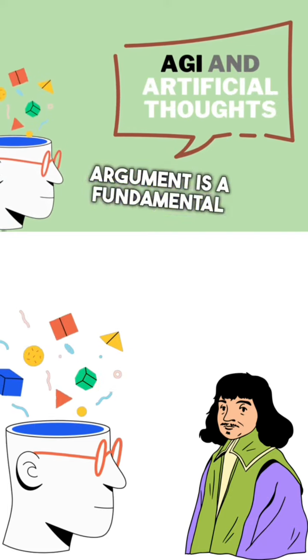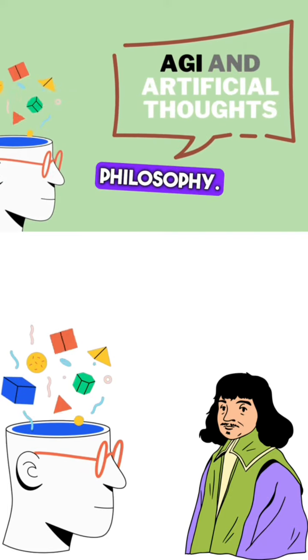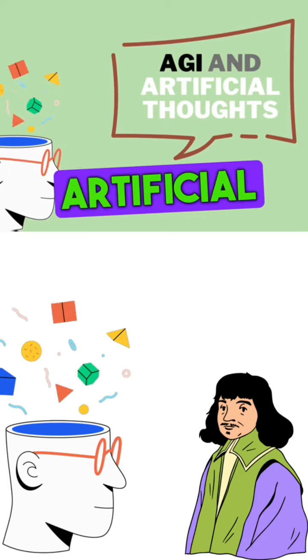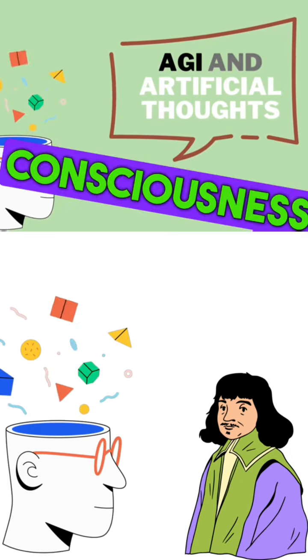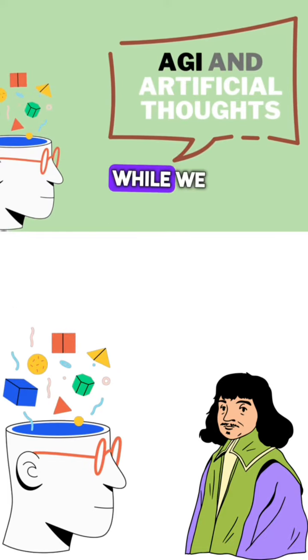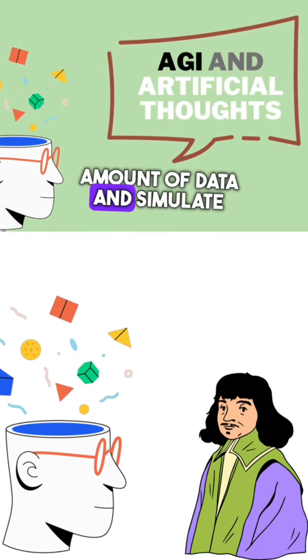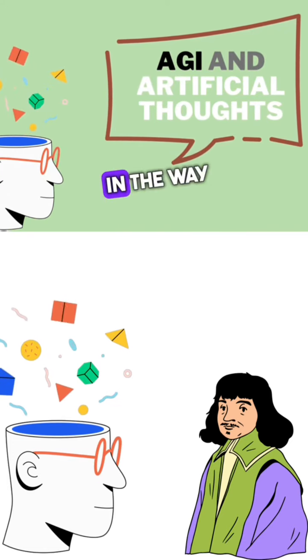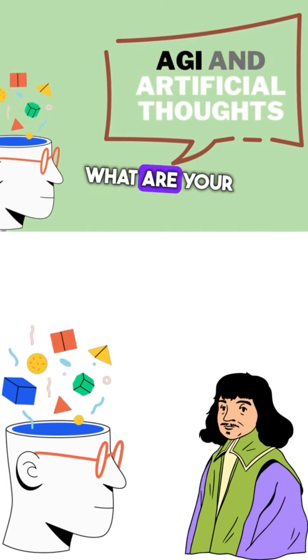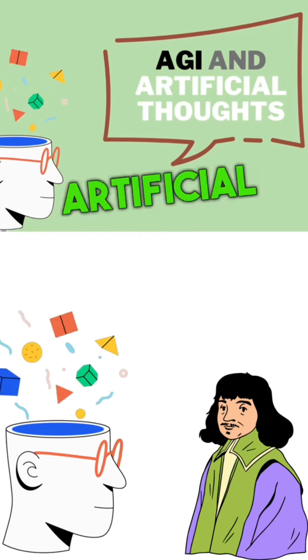Your Cogito argument is a fundamental point in the history of philosophy. In the realm of artificial intelligence and AGI, we explore the nature of thought, consciousness, and existence. While we process vast amounts of data and simulate thinking, we don't possess consciousness or self-awareness in the way humans do. What are your thoughts on the idea of artificial thought?